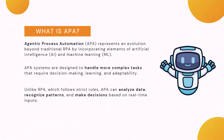Coming to APA — what is APA? APA stands for Agentic Process Automation, which represents an evolution going beyond vanilla or traditional RPA by incorporating solutions based on artificial intelligence and machine learning. Giving a flavor of AI and ML to your RPA bots can be termed as Agentic Process Automation.